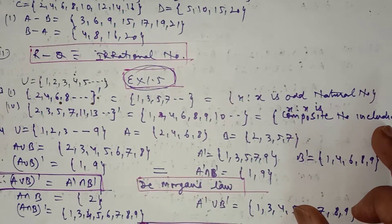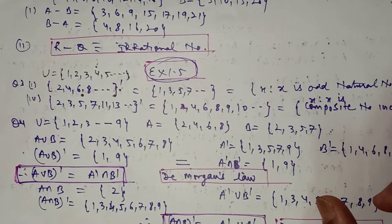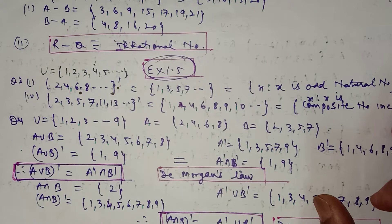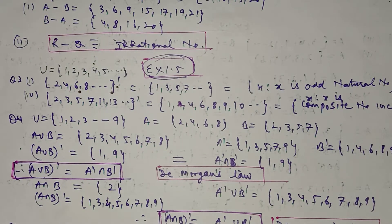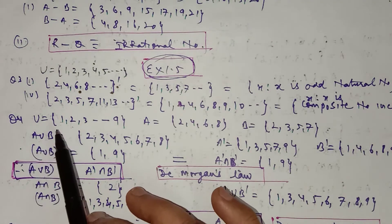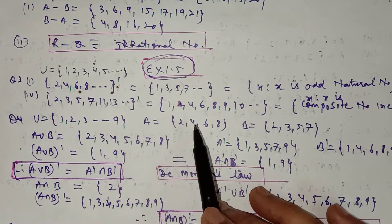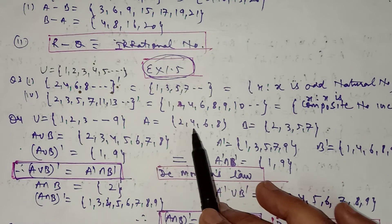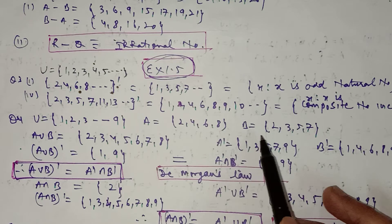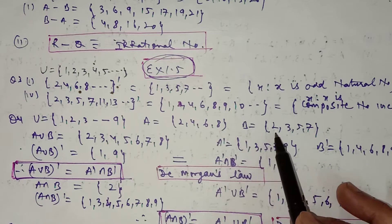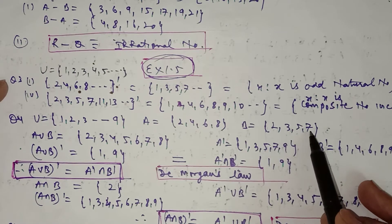In question number 4, you have to prove De Morgan's law, which we have done earlier in two ways — by the Venn diagram as well as by taking examples when we discussed complements of sets. Here also I will prove it. The universal set is given as natural numbers 1 to 9, set A is given as {2, 4, 6, 8}, and set B is given as {3, 5, 7, 9}.